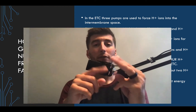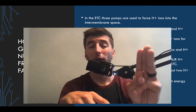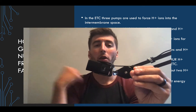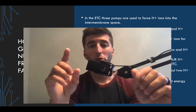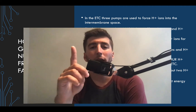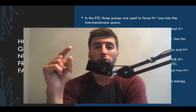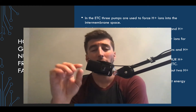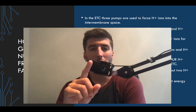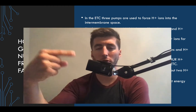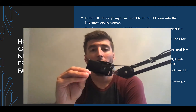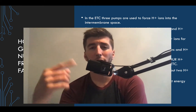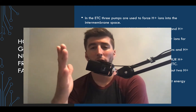At the end, NADH has pumped out 8 + 2 = 10 hydrogen ions total, while FADH has pumped out 4 + 2 = 6 hydrogen ions. Since ATP synthase requires four hydrogen ions per ATP produced, NADH gives us 10 ÷ 4 = 2.5 ATP, and FADH gives us 6 ÷ 4 = 1.5 ATP.